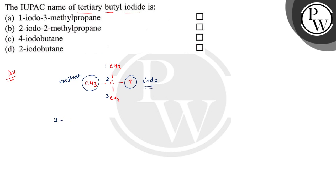So the nomenclature will start with 2-iodo-2-methyl, and the carbon chain contains 3 carbons so it is propane. So the correct option is B. It is 2-iodo-2-methylpropane.